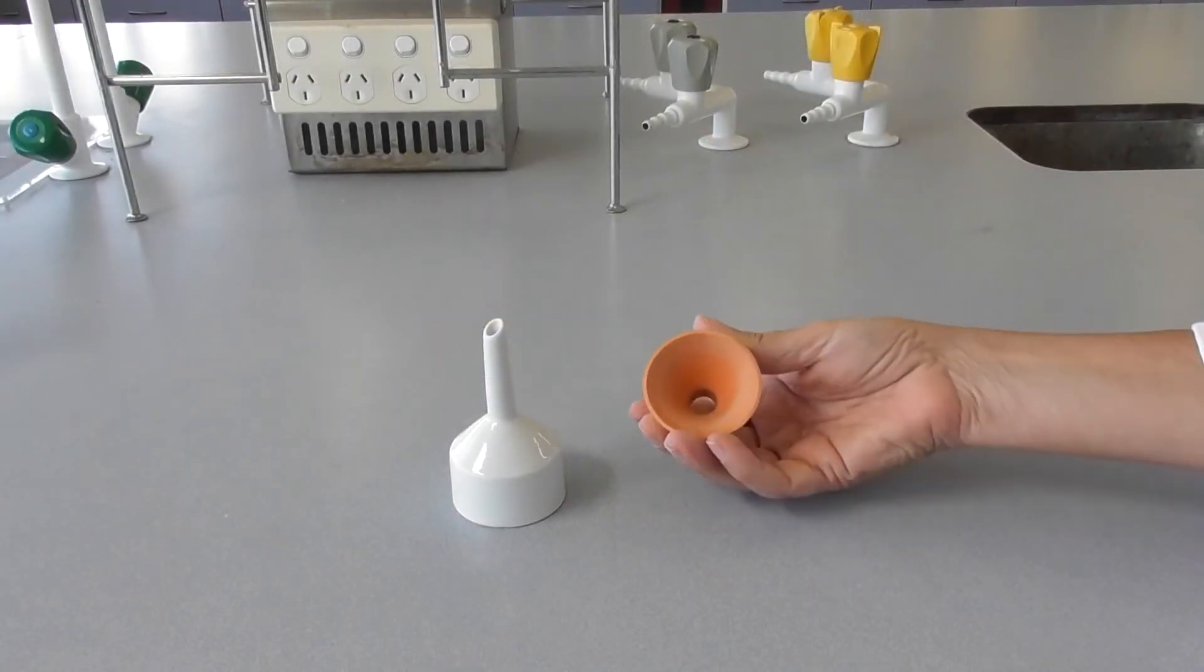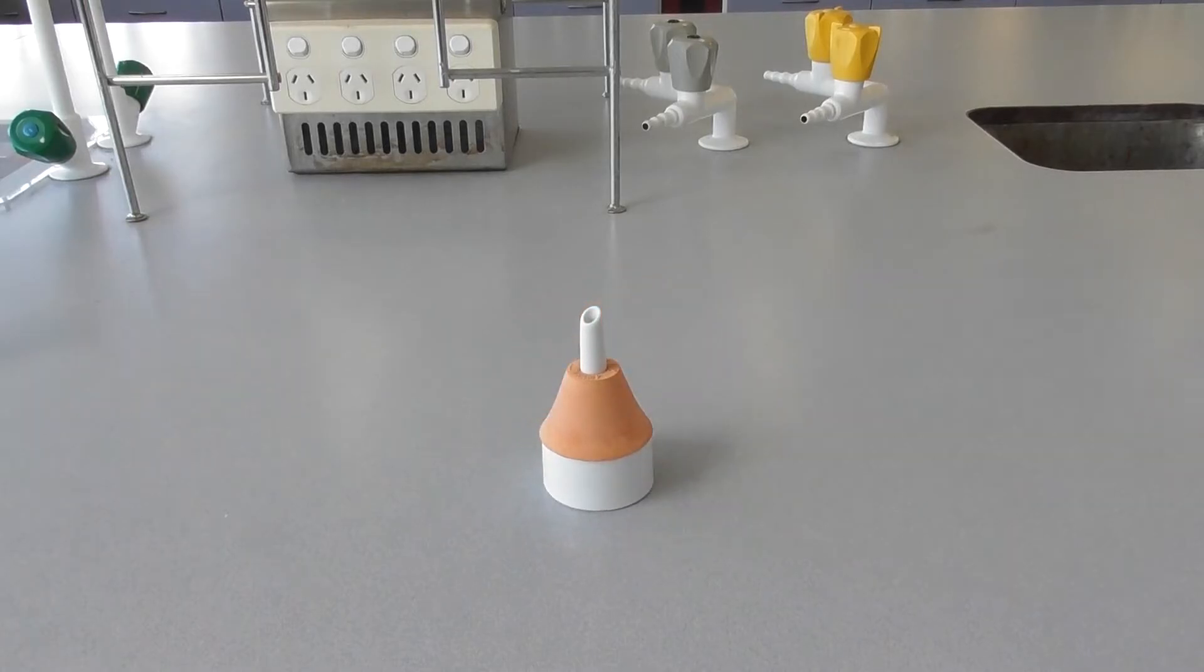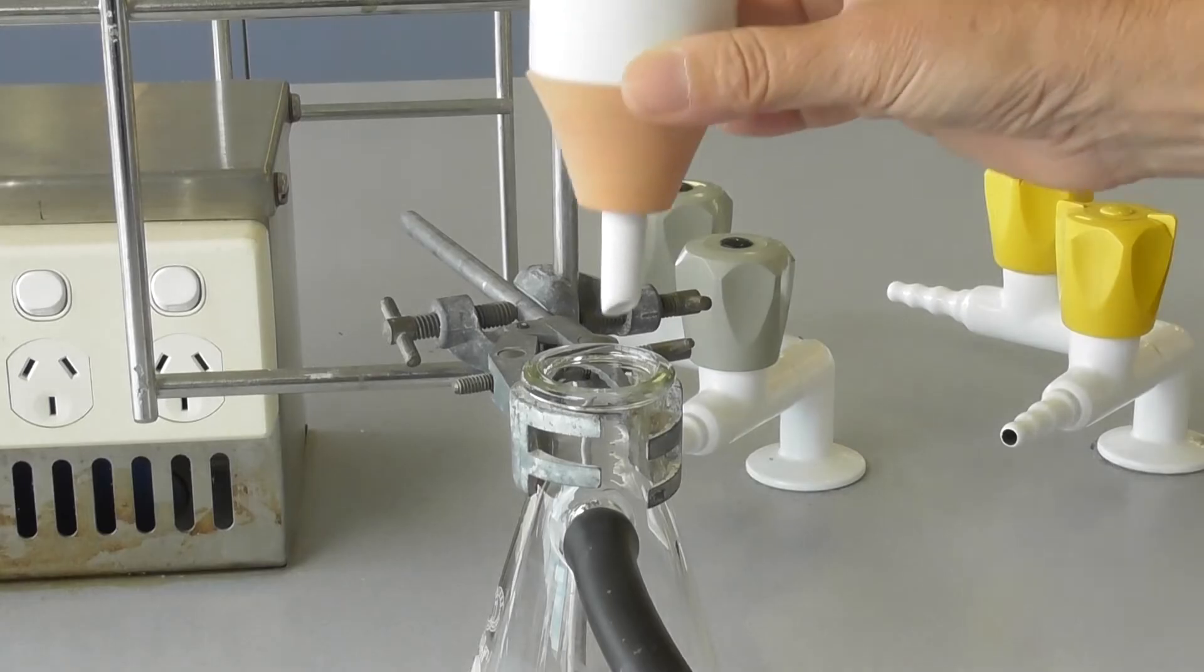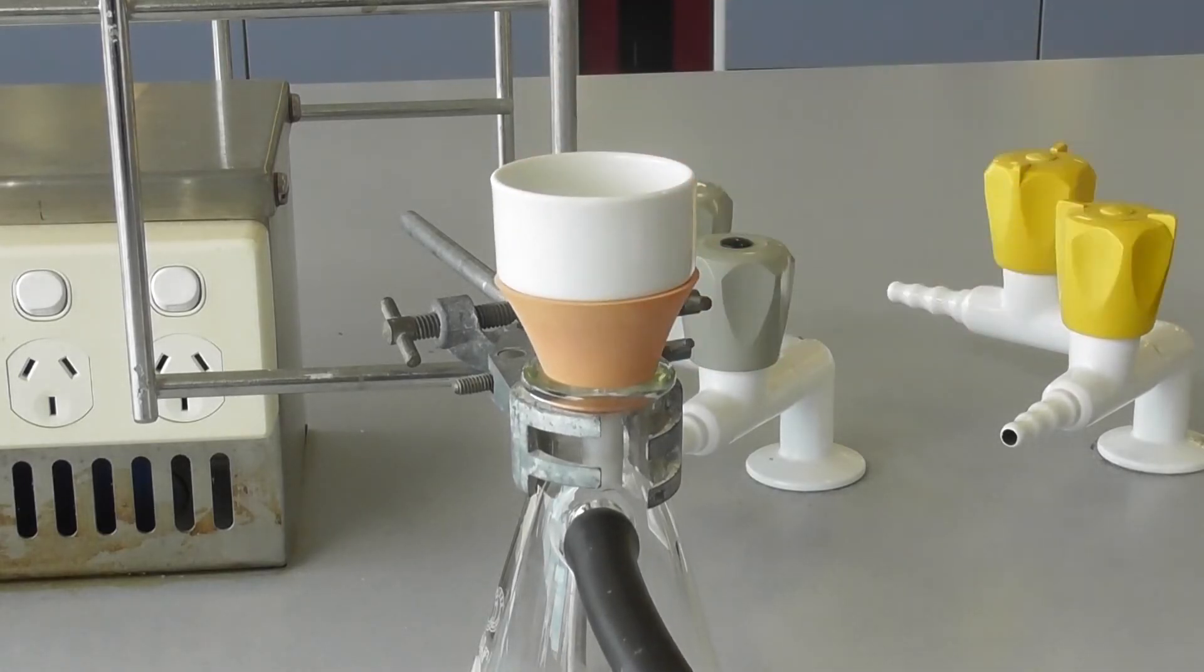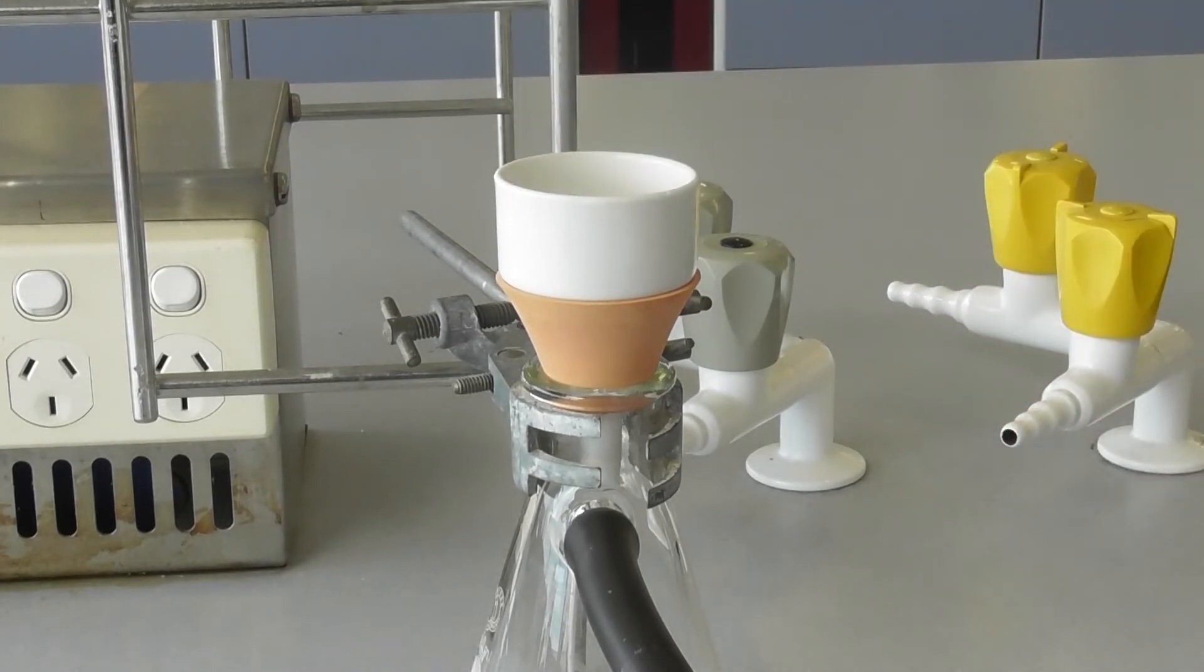To create a vacuum seal with the Büchner flask you must fit a rubber cone to the bottom of the Büchner funnel. Insert the Büchner funnel into the mouth of the Büchner flask. This fit may initially be loose but as the vacuum is applied the seal will form.